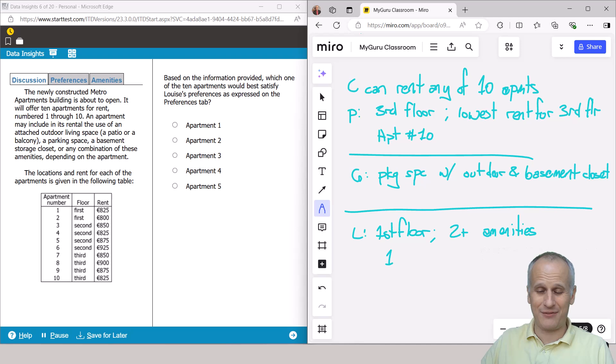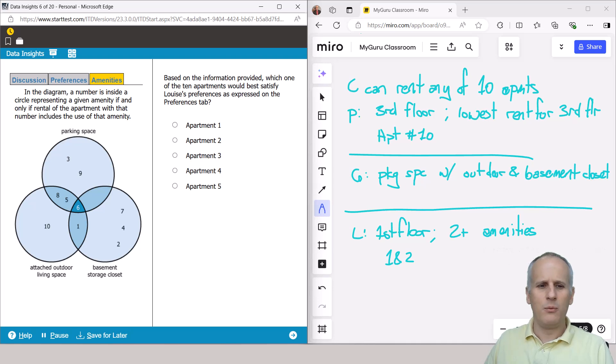So we've got to go to the discussion tab and figure out what the first floor apartments are to start. And we know that they're there. We don't have to hunt and peck. So now we just write it out that it's the first floor are apartments one and two. So we already know that it's not three, four or five is the correct answer. So then we'll go to the amenities. We've got to look at one and two. So two states that there's a basement storage closet only. So that doesn't satisfy Louise's preference, but one does. And that's our correct answer. And you can see how quickly you can work through what is for many people a relatively difficult thing, a set of multi-source reasoning.